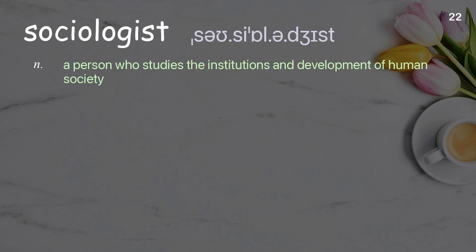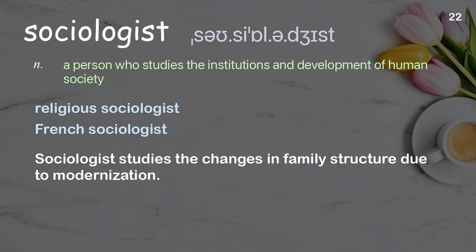Sociologist: a person who studies the institutions and development of human society. Examples: religious sociologist, French sociologist. A sociologist studies the changes in family structure due to modernization.